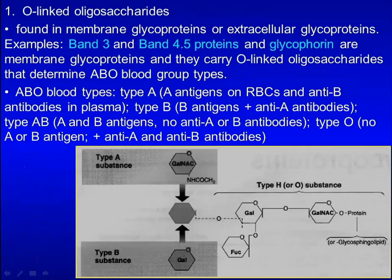O-linked oligosaccharides are found in membrane glycoproteins or extracellular glycoproteins. For example, band-3 and band-4.5 proteins and glycophorin are membrane glycoproteins and carry O-linked oligosaccharides that determine ABO blood group types.